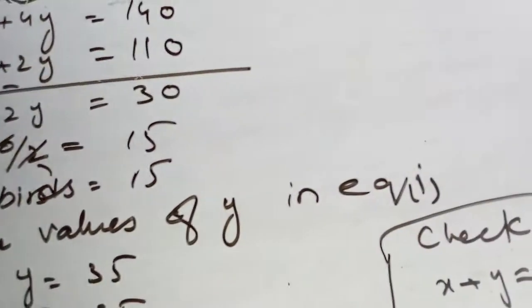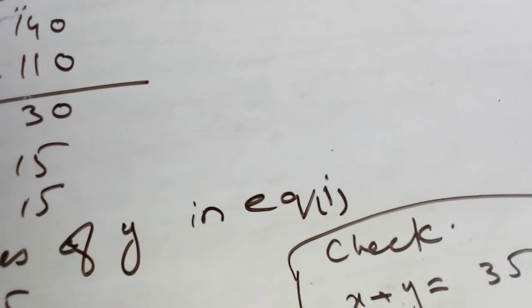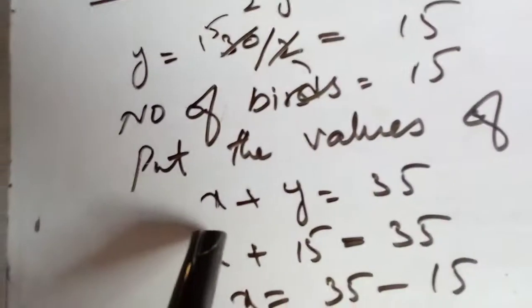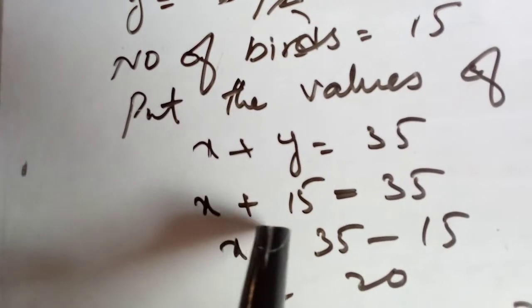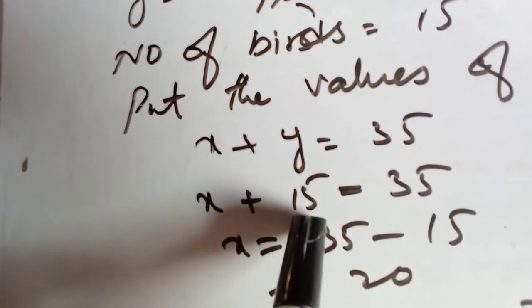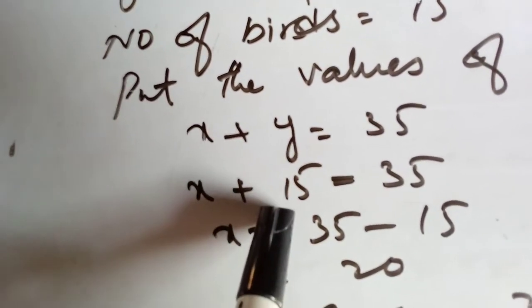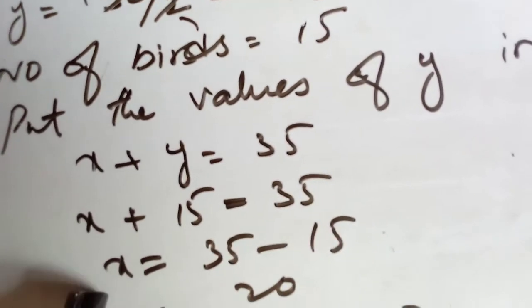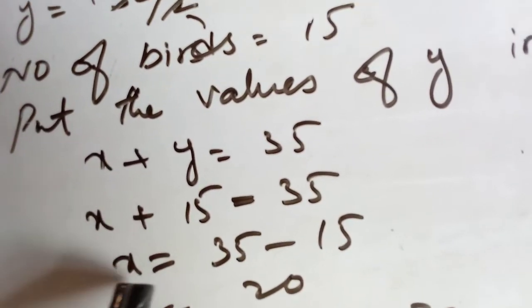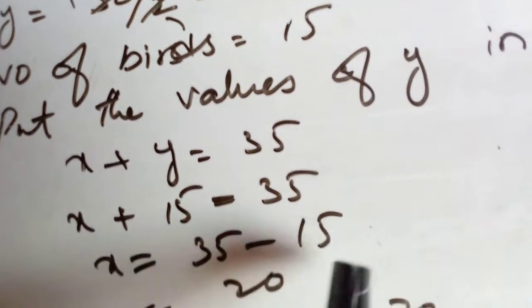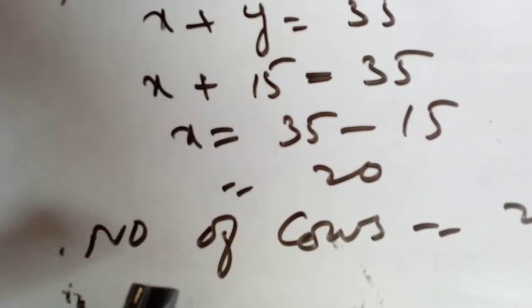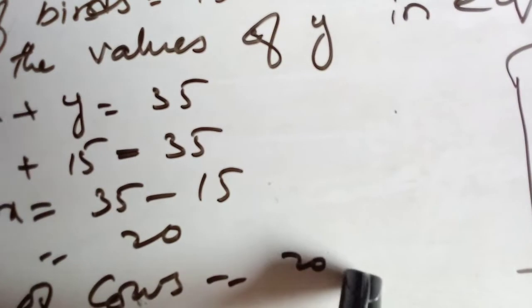Now put the value of y into equation 1. x plus y equals 35. So x plus 15 equals 35. Therefore x equals 35 minus 15, which gives us x equals 20.